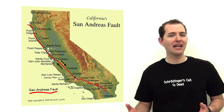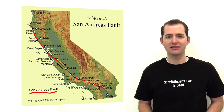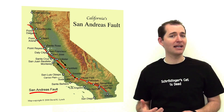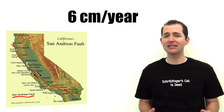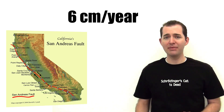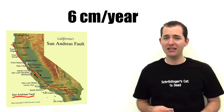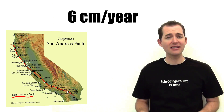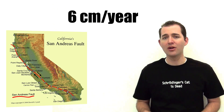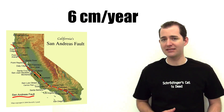A famous transform boundary is the San Andreas Fault in California. These two plates slide past each other at a rate of about 6 centimeters per year. What this means is that in about 10 million years, the cities of Los Angeles and San Francisco will be side by side.